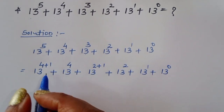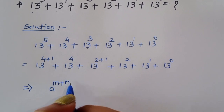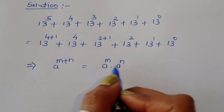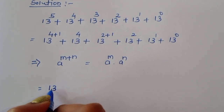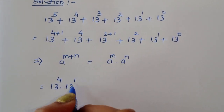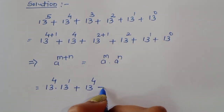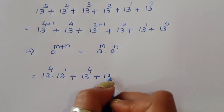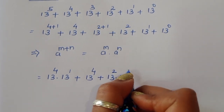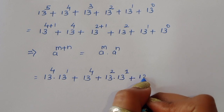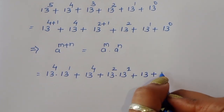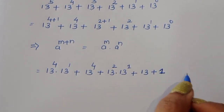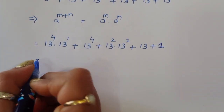Now, we know the formula: a power (m plus n) equals a power m times a power n. Using this formula, we get 13 power 4 times 13 power 1 plus 13 power 4, plus 13 power 2 times 13 power 1 plus 13 power 2, plus 13 power 1, which is 13, plus 13 power 0, which is 1. Any number to the power 0 equals 1.